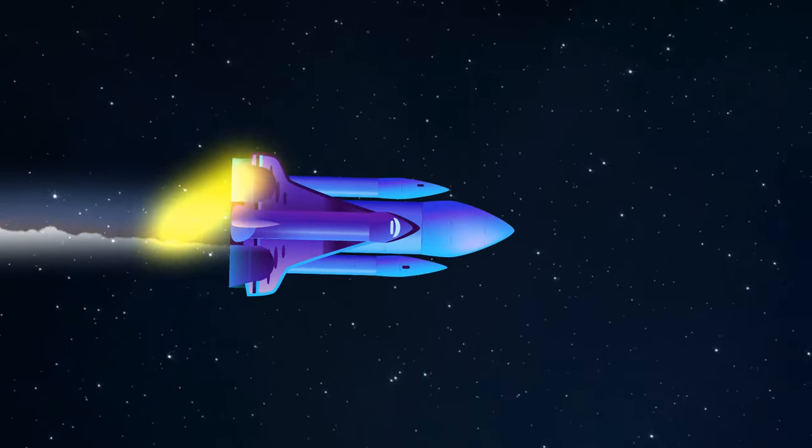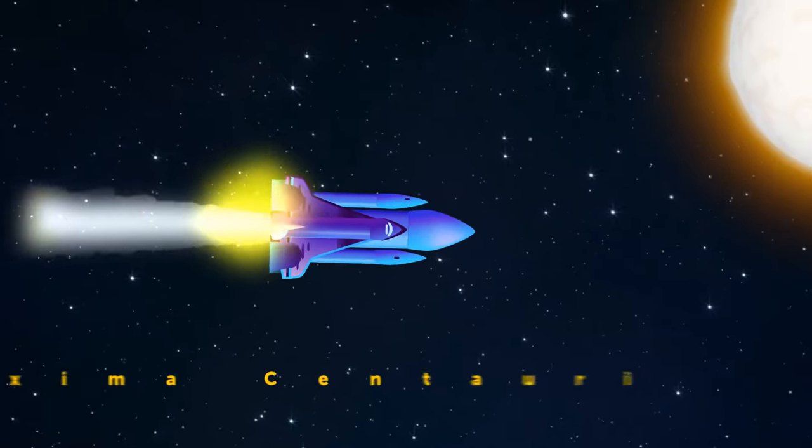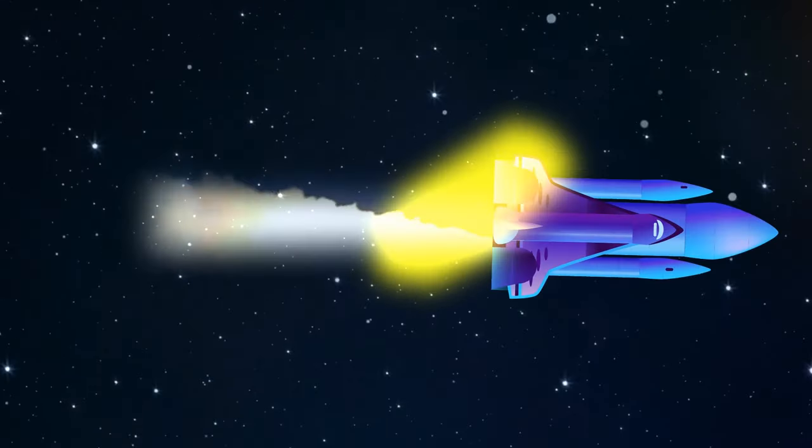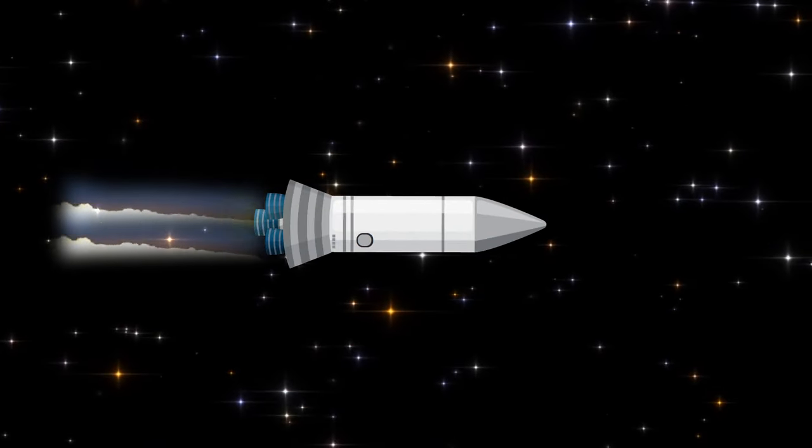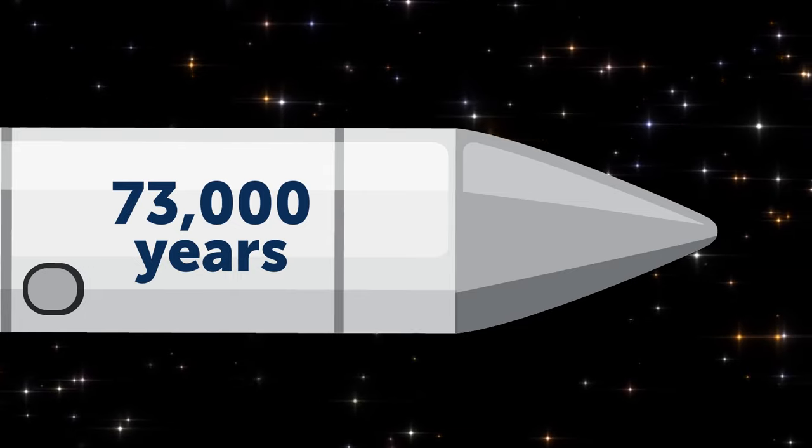Now, we're approaching the nearest star to our solar system. It's Proxima Centauri. We're so far from home that even light needs more than four years to travel this distance. If we used a traditional rocket, the trip would take us 73,000 years.